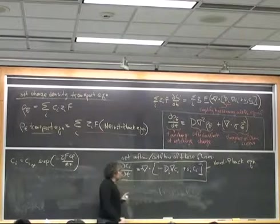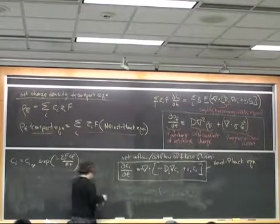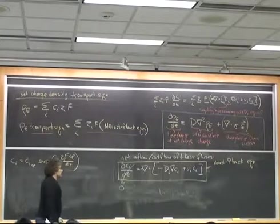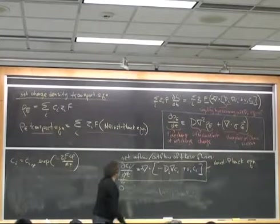So at equilibrium, in the Nernst-Planck equation, C_i is not changing. So at equilibrium this goes to 0. And when I do that,